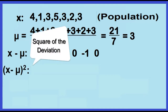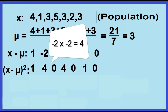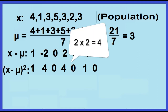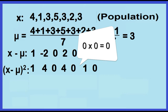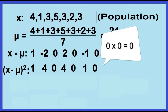Third, square the deviation from the mean. 1 times 1 is 1. Negative 2 times negative 2 is 4. 0 times 0 is 0. 2 times 2 is 4. 0 times 0 is 0. Negative 1 times negative 1 is 1. 0 times 0 is 0.